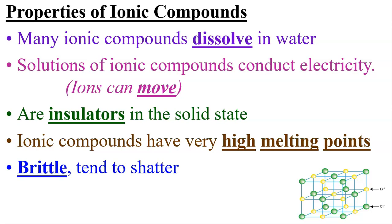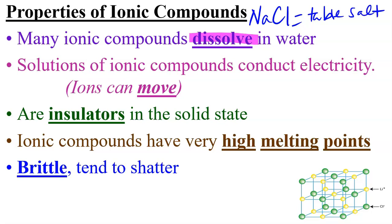Your ionic compounds — many of your compounds will dissolve in water. Remember, you had sodium chloride, NaCl — that's table salt — and you can dissolve table salt in a cup of water pretty easily. Solutions of many ionic compounds conduct electricity, so your ions can move. They are also insulators in their solid state. Ionic compounds also have very high melting points and they're brittle, so they tend to shatter.